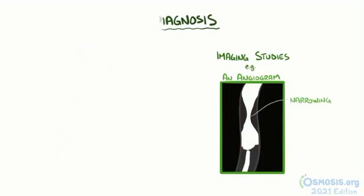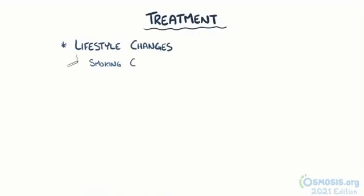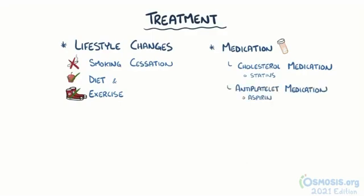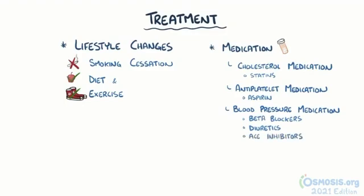These diseases can often be treated with lifestyle changes, like stopping smoking and improving diet and exercise, which can help improve underlying conditions like diabetes mellitus or hypertension. In some cases, medication might be required. Cholesterol medications like statins can be used to improve lipid profiles. Antiplatelet medications like aspirin can be used to reduce blood clotting. And blood pressure medications like beta blockers, diuretics, and angiotensin-converting enzyme inhibitors or ACE inhibitors can help lower blood pressure.